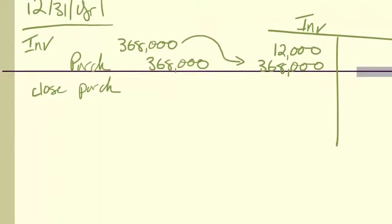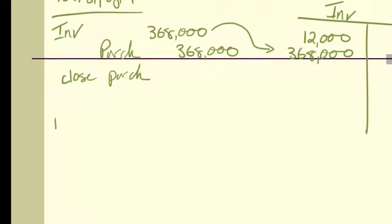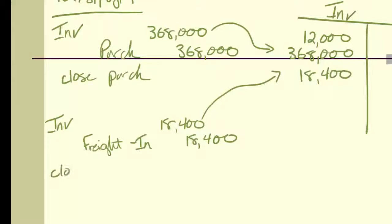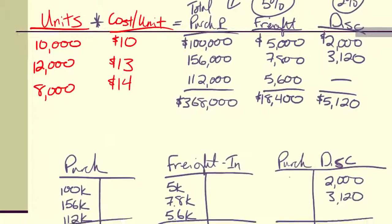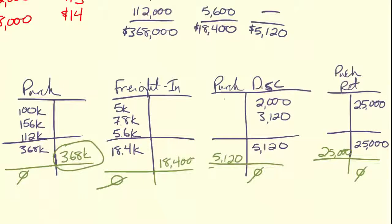Our next journal entry, also on 12/31, we're going to close that freight in. So inventory and freight in. And we said we needed to close $18,400. Can't leave a naked journal entry. Got to have a description on there. No naked journal entries. So now that we've done that, I'm getting these numbers right from these T accounts. There's that $368,000, and here's the $18,400, and I'm going to use these two next. So it comes right from those T accounts.